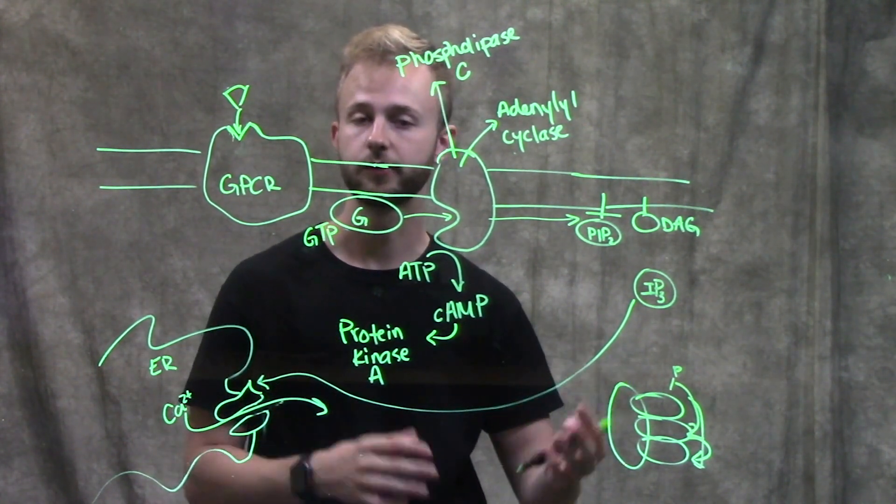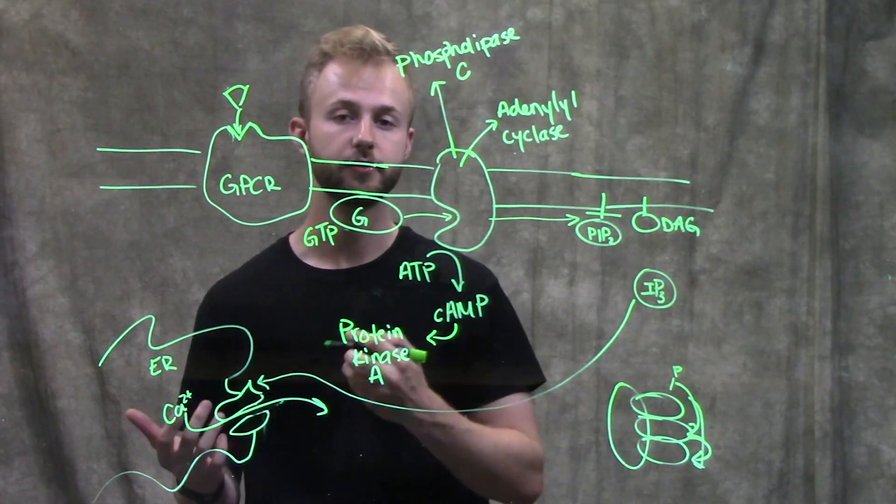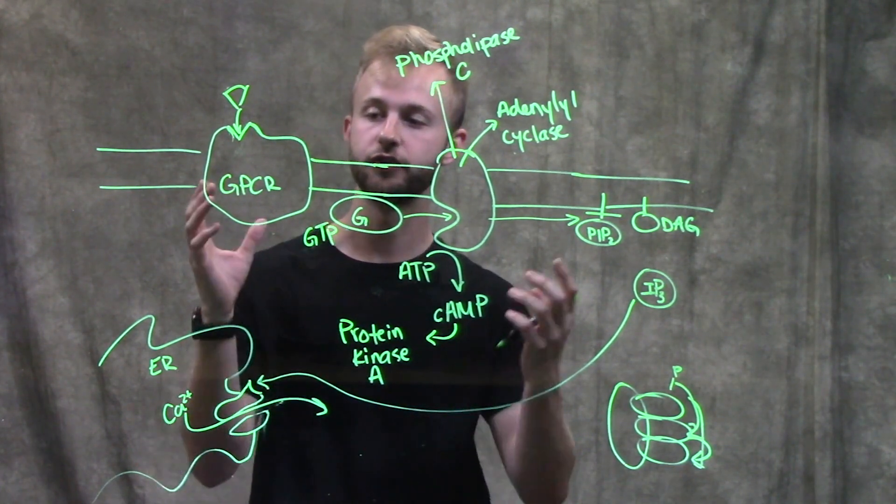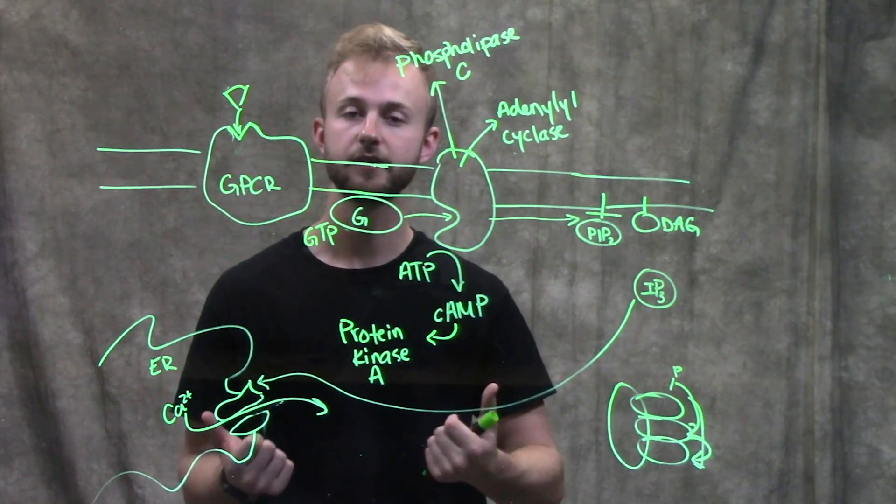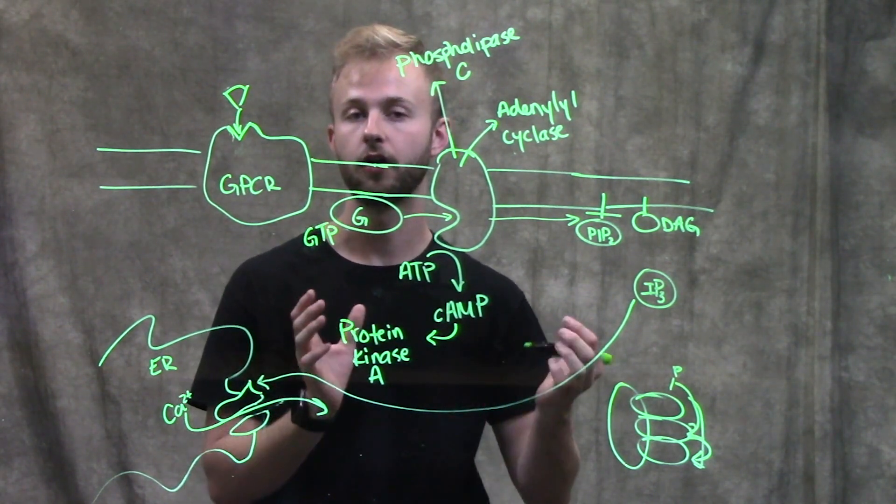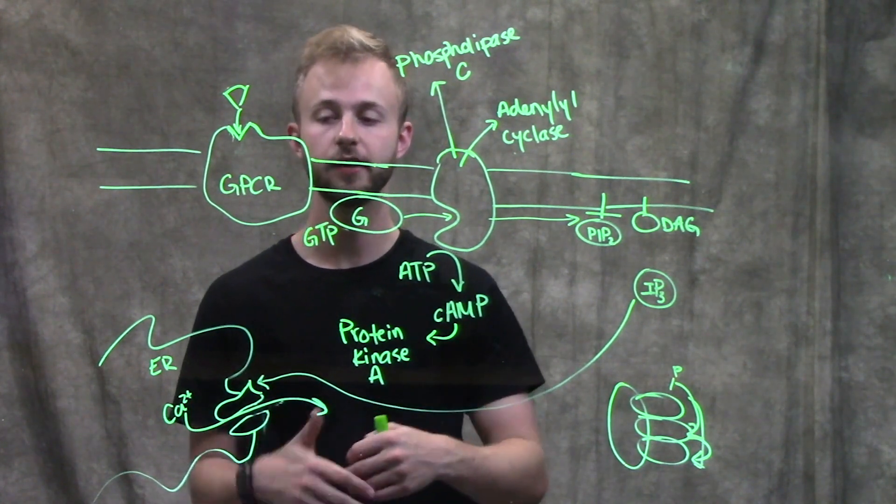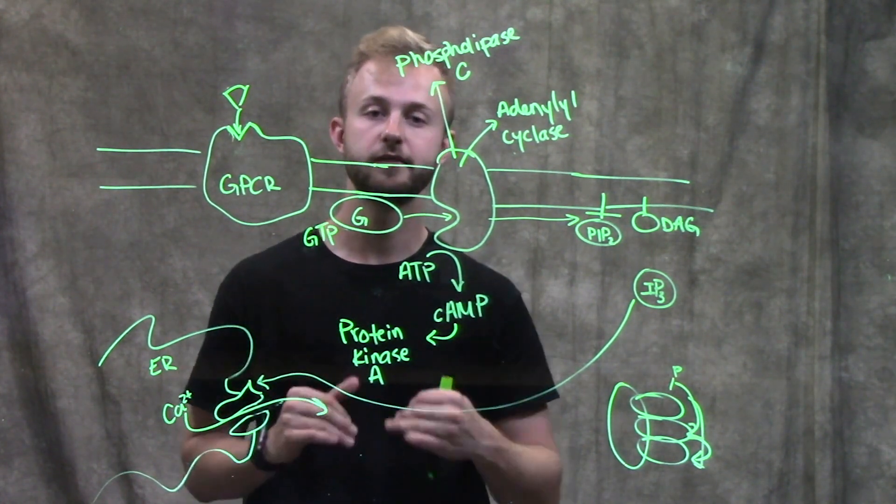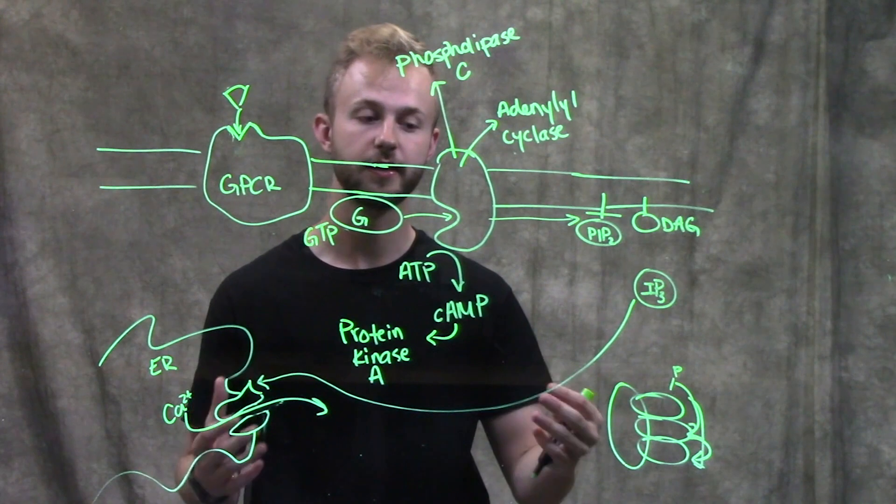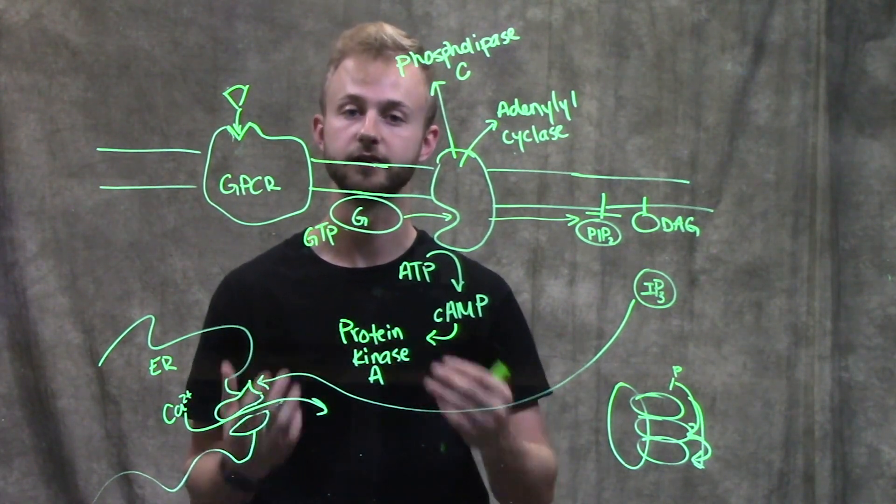And then like I mentioned earlier with the threshold when we talked about termination, what's going to happen is you're no longer going to have enough receptors being activated because ligands are binding reversibly to these receptors. And so once they dissociate, the signal drops back down below that threshold and eventually the entire pathway will stop.